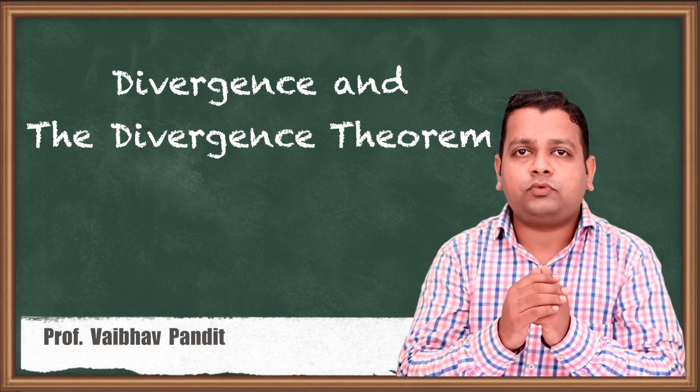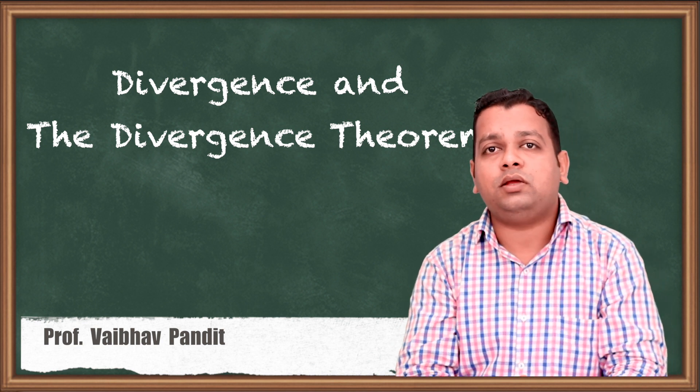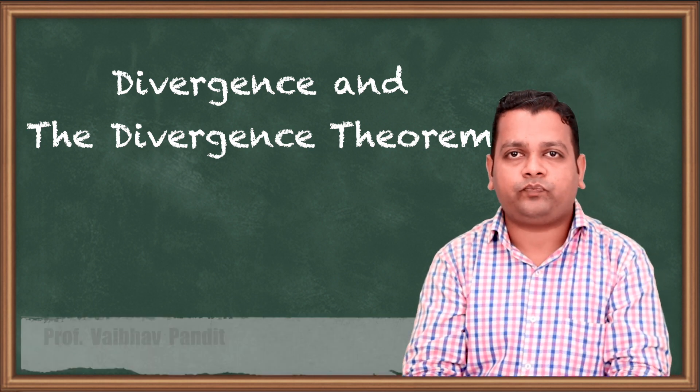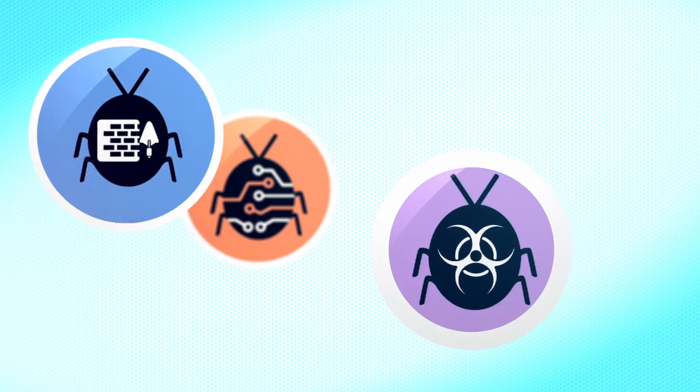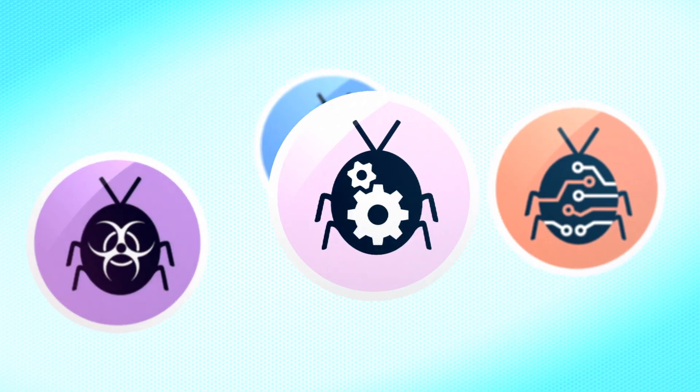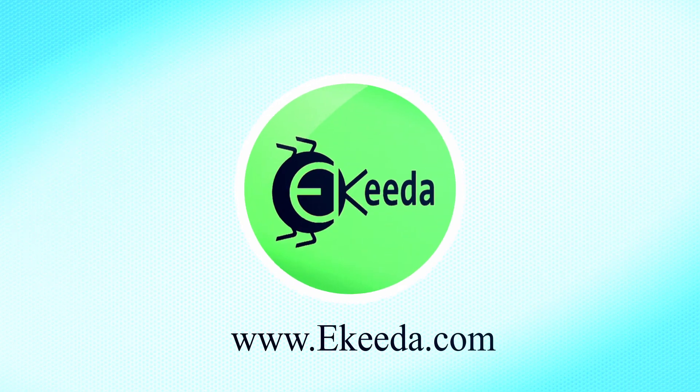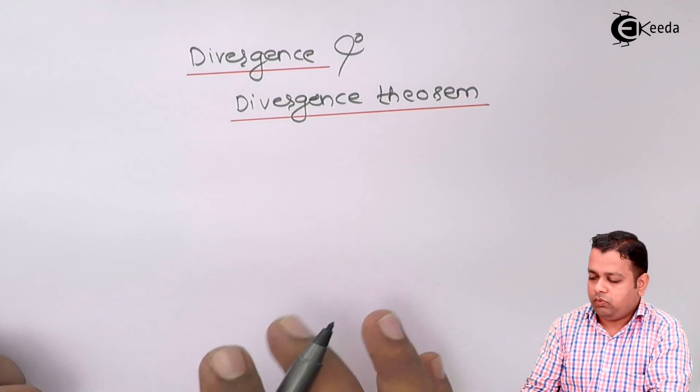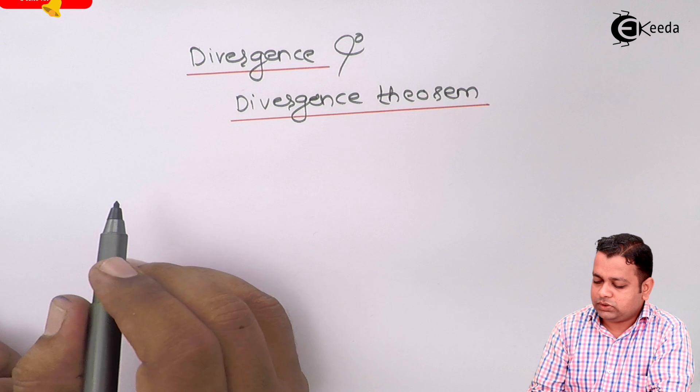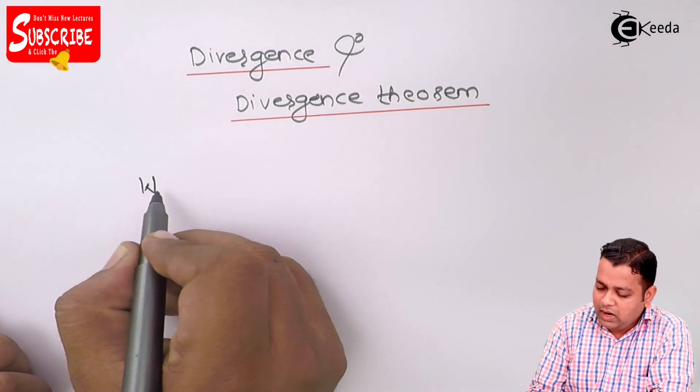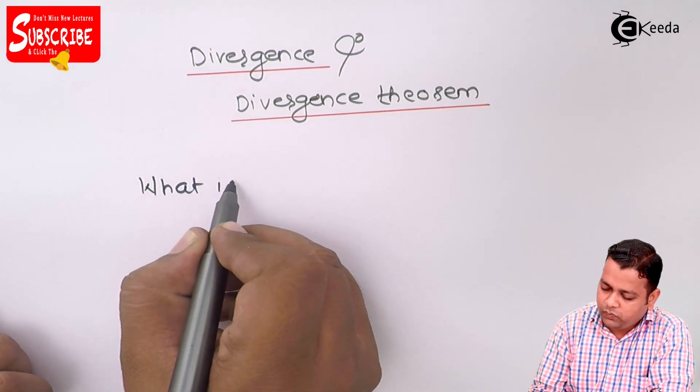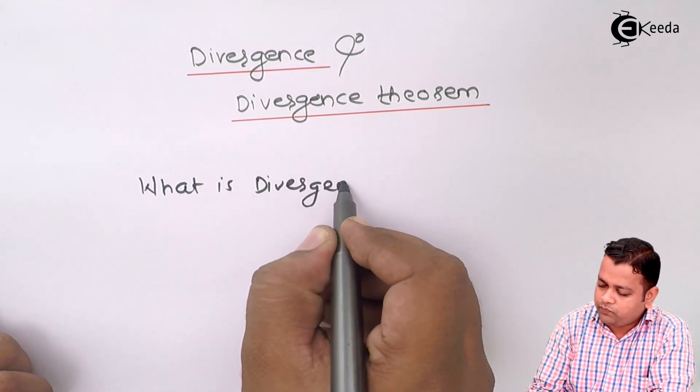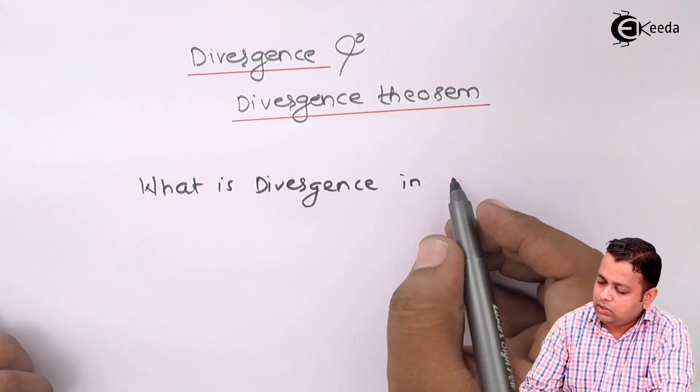Now here the concept of divergence we find in electrostatics. What exactly is that? Let us see. The first point in this chapter for this particular topic is what is exactly the divergence in electric field.